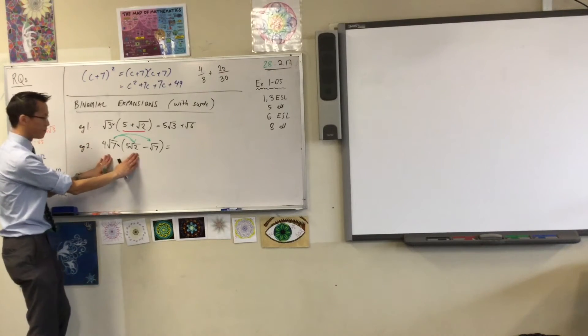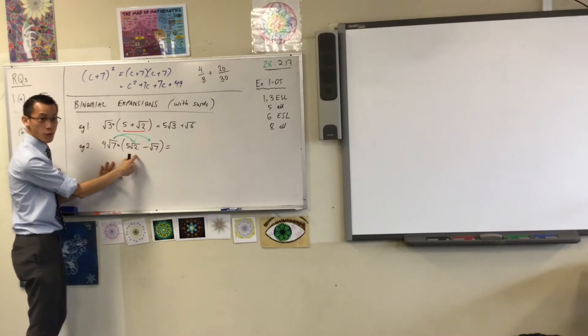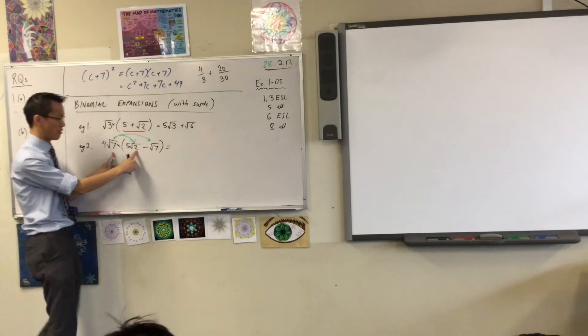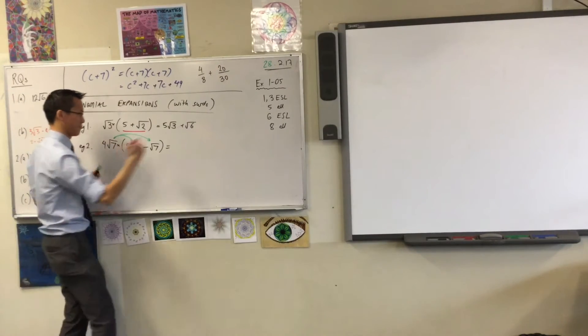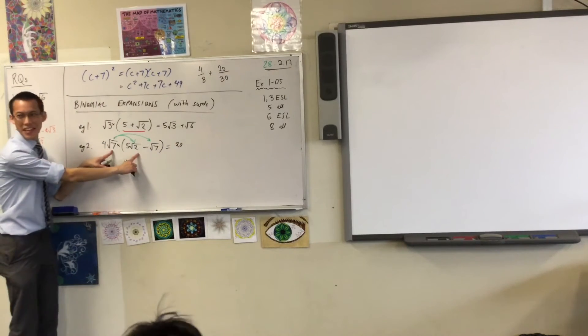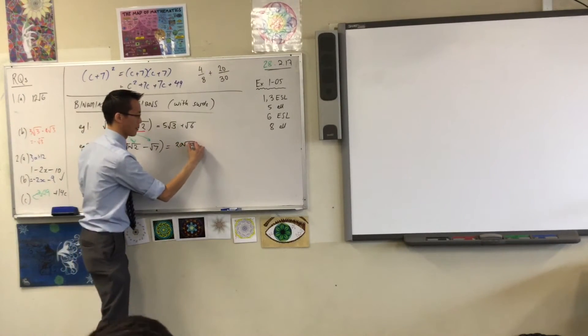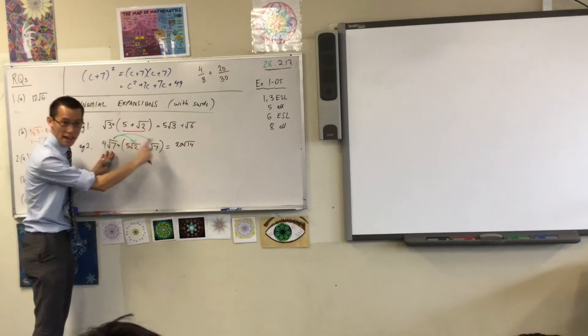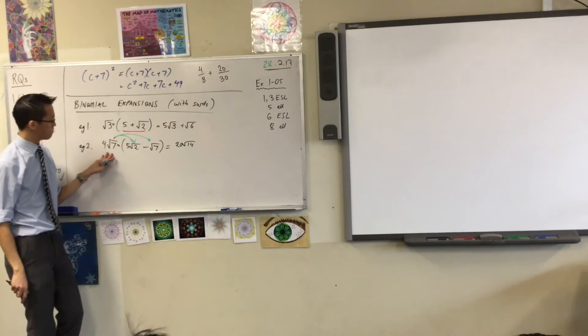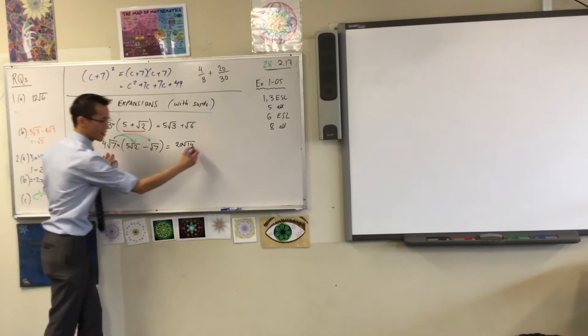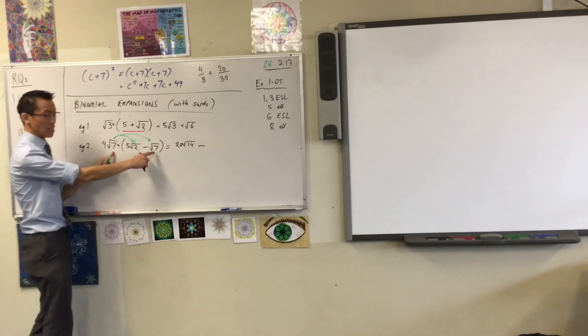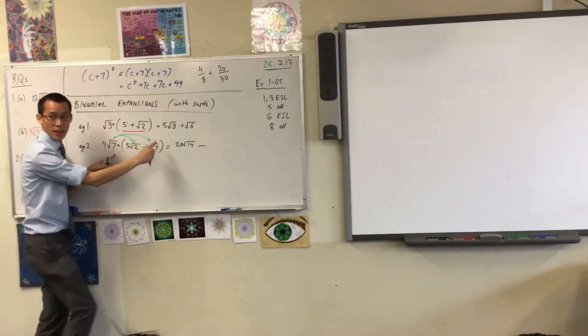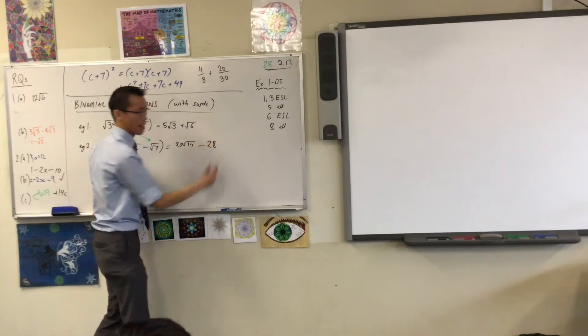So let's just deal with the first one. 4√7 times 5√2. Probably the easiest way is to deal with these guys first, the whole numbers, and then deal with the surds. So, 4 by 5... 20. √7 times √2... 14. So this is the first part. And then we're on to the second pairing. 4√7 times minus √7. Watch out for that sign. So what am I going to get? So the first thing is definitely minus. The √7 times √7 will become just 7. So 4 times 7 will be 28. Are you okay with that?